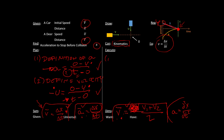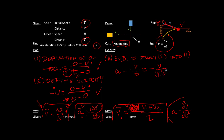Now we need to execute. We substitute T from equation 2 into equation 1. We have A equals minus V over T. We substitute T, which is Y over U. So we have minus V over Y-over-U, which equals minus U times V over Y. And so that's the answer right there: minus UV over Y.